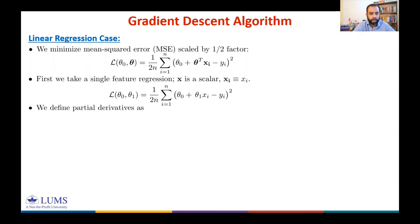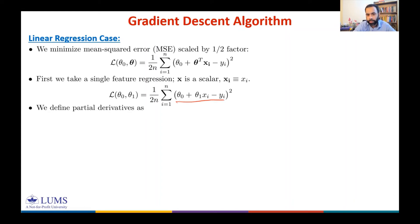Taking the derivative with respect to θ₀: the factor of two cancels with the one-half, leaving (1/n) Σᵢ (θ₀ + θ₁xᵢ − yᵢ) × 1. The terms θ₁xᵢ and yᵢ have zero derivative with respect to θ₀, so the partial derivative of the loss with respect to θ₀ is (1/n) Σᵢ (θ₀ + θ₁xᵢ − yᵢ).